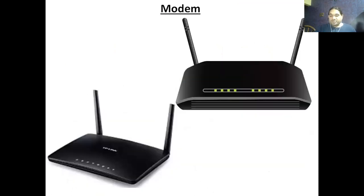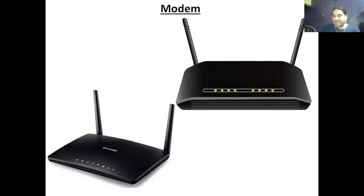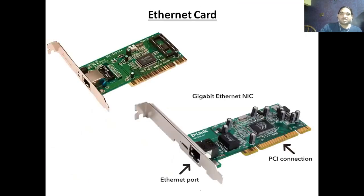Next is the modem — also called a modulator-demodulator. It is a device that modulates an analog carrier signal to encode digital information, and also demodulates such a carrier signal to decode transmitted information. The goal is to produce a signal that can be transmitted easily and then decoded to reproduce the original digital data. Modems are common at home and come in different brands and colors, but the function is the same — without a proper connection you cannot access the internet.